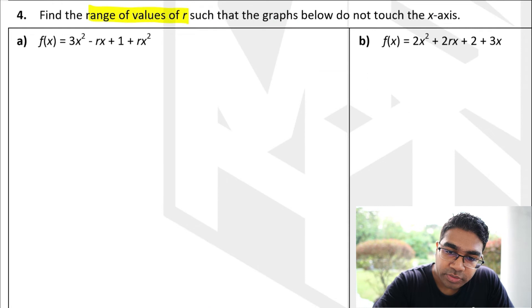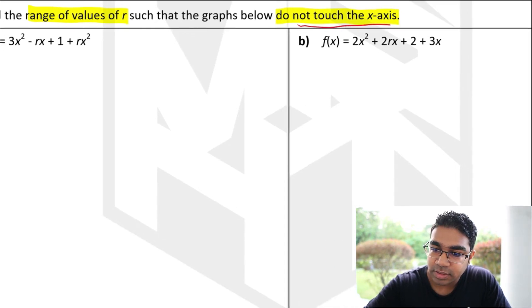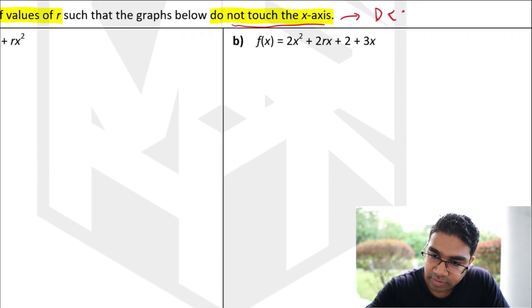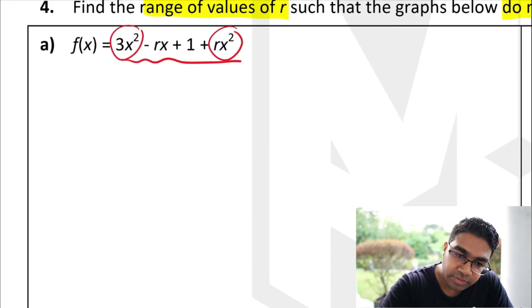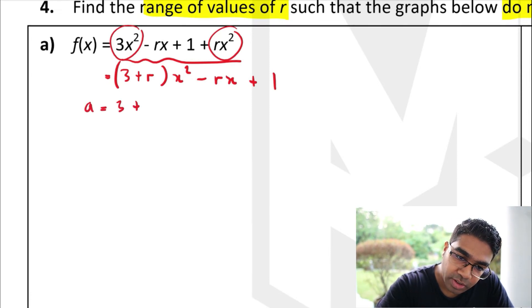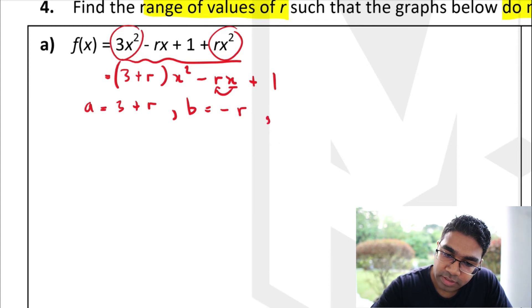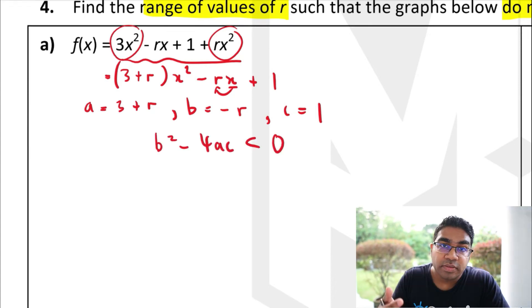Let's try one more. Find the range of values of r such that the graph does not touch the x-axis. If the graph doesn't touch the x-axis, the discriminant is negative: b² − 4ac < 0. The expression is not in general form yet, so we rearrange: f(x) = (3 + r)x² − rx + 1. Now we can identify a = 3 + r, b = −r, and c = 1.